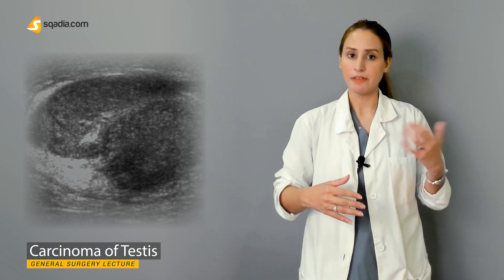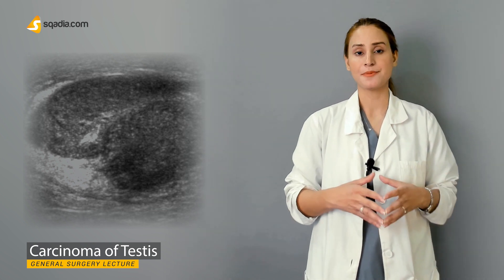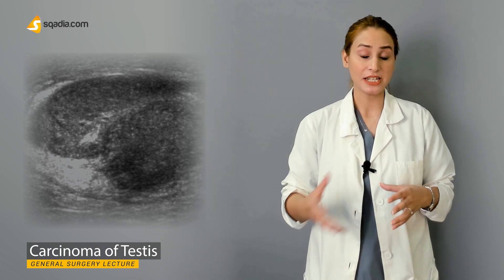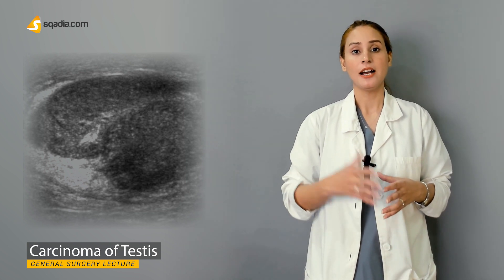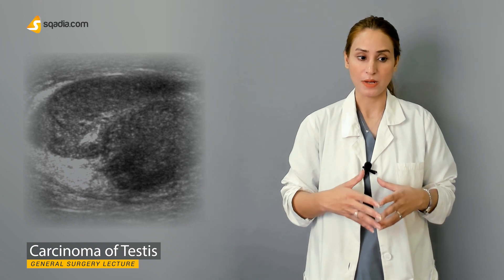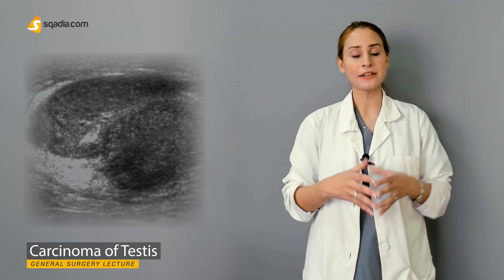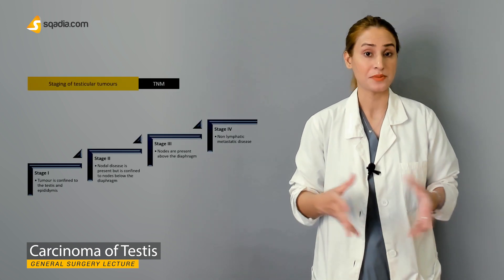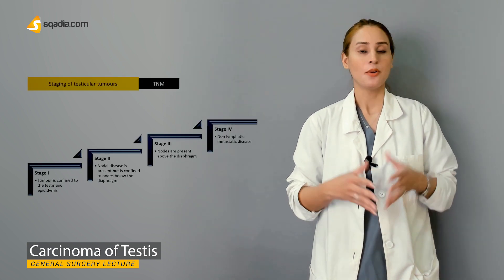We'll discuss different biomarkers which are specific to particular kinds of tumors, such as alpha-fetoprotein (AFP), which is specific to the yolk sac tumor, and beta-HCG, which is specific to choriocarcinomas.